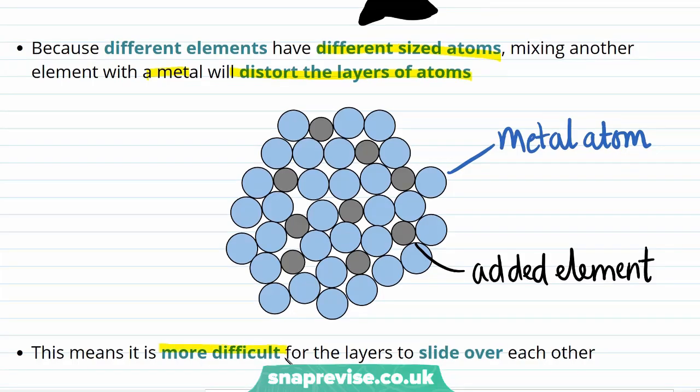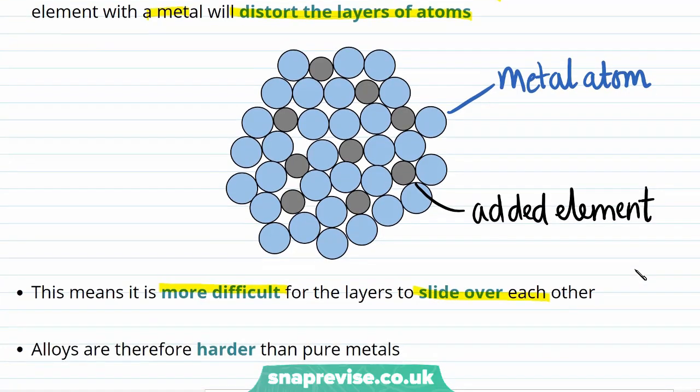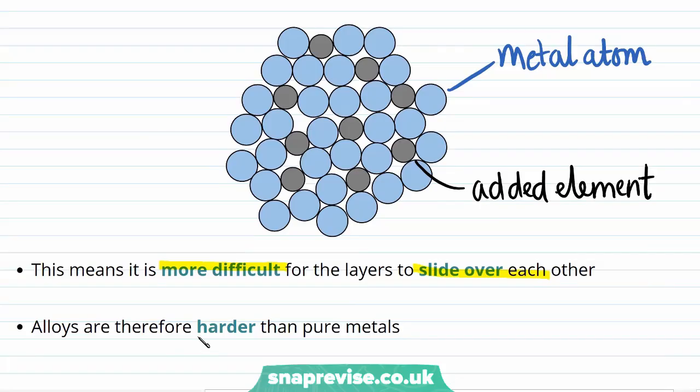The result is that it is more difficult for the layers to slide over each other. And this is what makes alloys harder than pure metals. Because you need to apply more force in order to distort or break this structure.